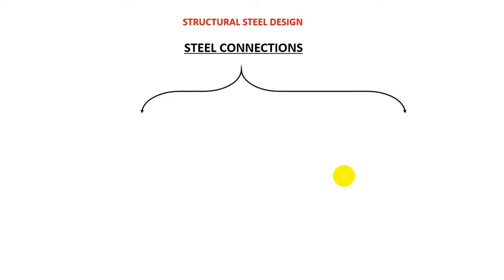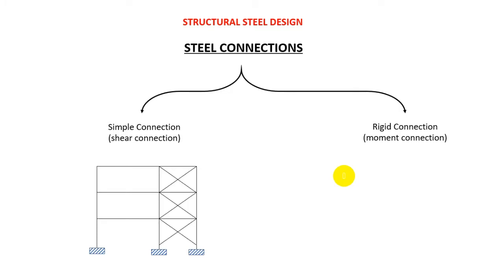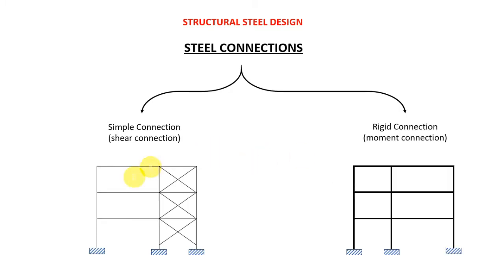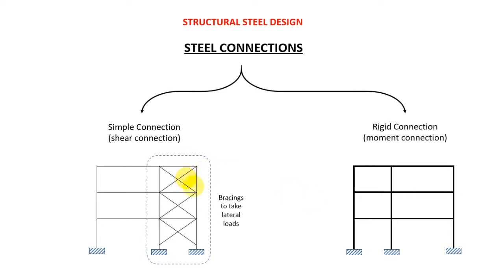Today we are talking about steel connections. There are mainly two types: the simple connection, also called the shear connection, and the rigid connection, also called the moment connection. In a simple connection, you have a lateral stability system to resist lateral forces. For the rigid connection, there are no such systems — no bracings, shear walls, or shear cores. In simple connections, bracings take the lateral loads, while in rigid frames, fixed joints transfer both moment and shear force.